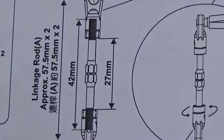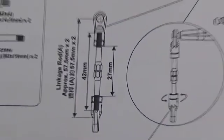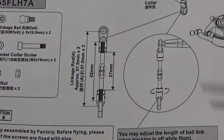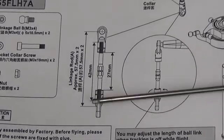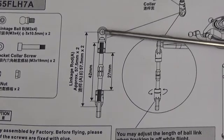Let me take a look here. On page 7 I am showing the links to go between the swash plate and the rotor head, and they give you a couple different measurements here. The most critical one though is 57.5 millimeters from center of the ball link to center of the ball link.